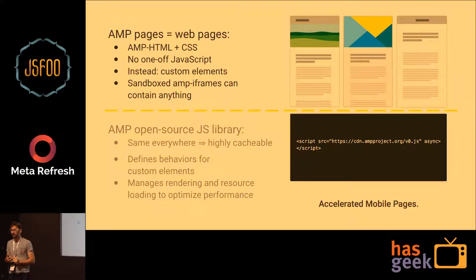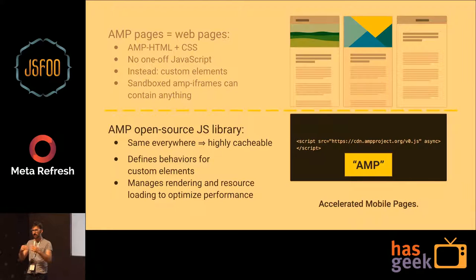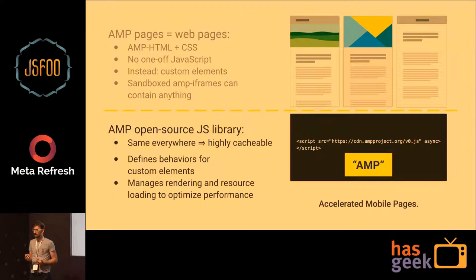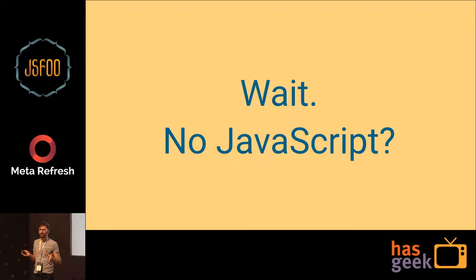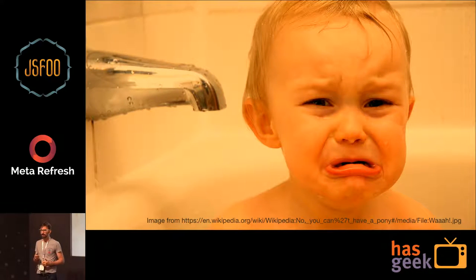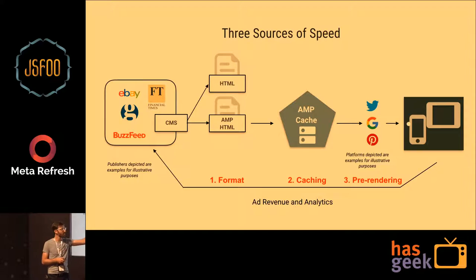AMP pages are really just web pages — HTML plus CSS. There's no author-written JavaScript. It uses custom elements and sandboxed AMP iframes. The AMP open-source JavaScript library is the same everywhere, highly cacheable, just one version so far. It defines behaviors for custom elements, manages rendering, and manages the loading pipeline to optimize performance.